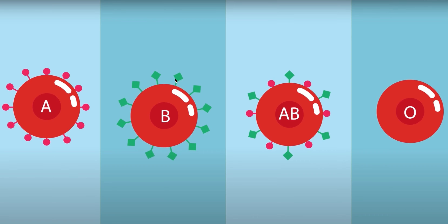This person has blood group AB because the red blood cells carry aglatinogen A and aglatinogen B at the same time. Finally, the red blood cells of a person carrying blood group O are without aglatinogen A or B.